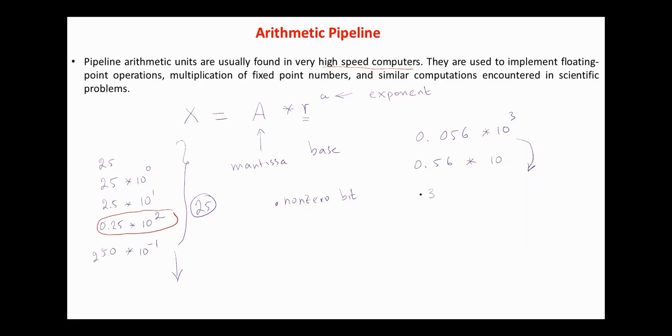And if we have the number 234 multiplied by 10 to the power 1, in order to normalize it, we have 0.234 and we have to increase the exponent in this case by 2.